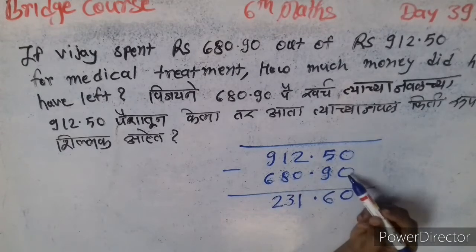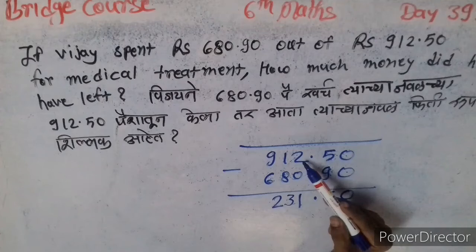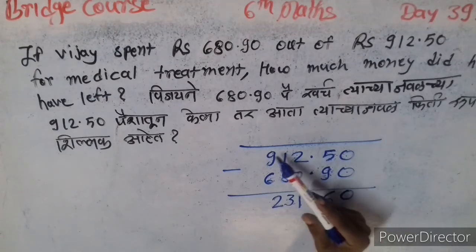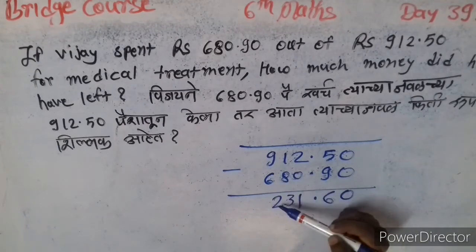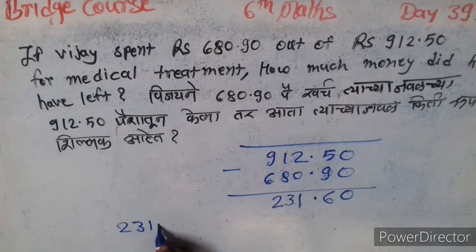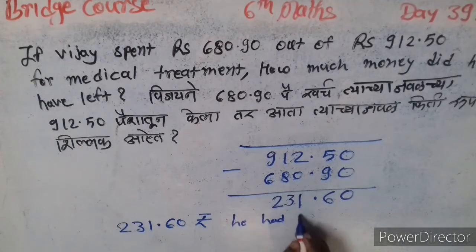Students, note: 0 minus 0 is 0. 5 minus 9 cannot be done, so we borrow — 15 minus 9 is 6, remainder 1. Then 1 minus 0 is 1. Borrow again: 11 minus 8 is 3, and 8 minus 6 is 2. So the answer is 231.60 rupees left.